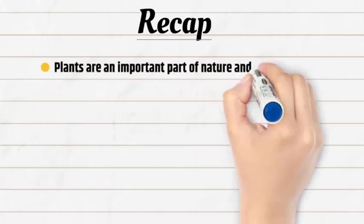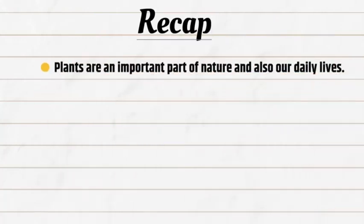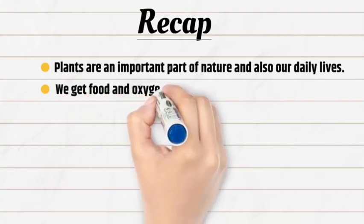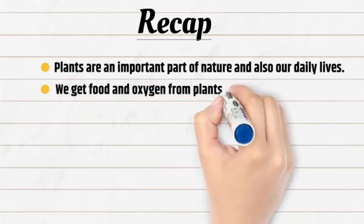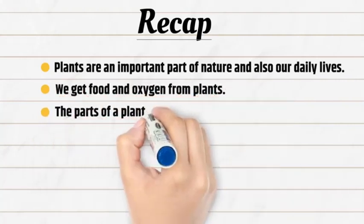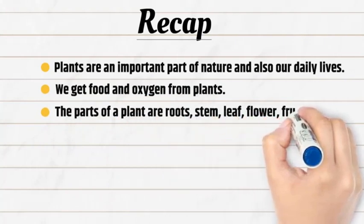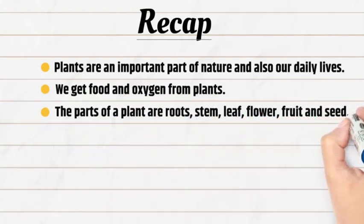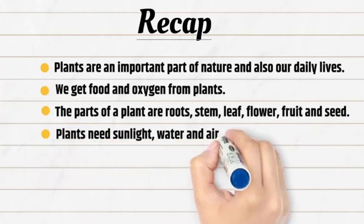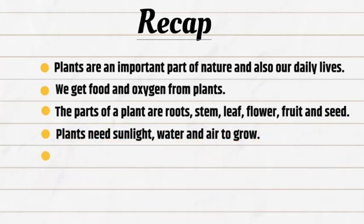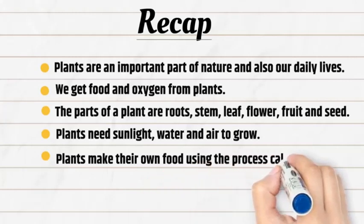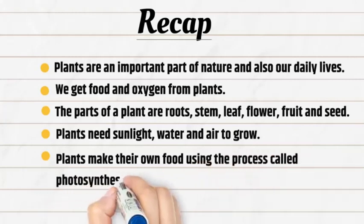Let's recap. First, plants are an important part of nature and also our daily life. Second, we get food and oxygen from plants. Third, the parts of a plant are root, stem, leaf, flower, fruit, and seed. Fourth, plants need sunlight, water, and air to grow. Fifth, plants make their own food using the process called photosynthesis.